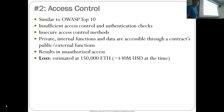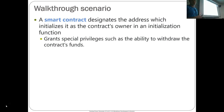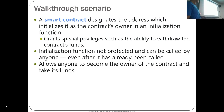This results in unauthorized access. Here is a walkthrough scenario: a smart contract designates the address which initializes it as the contract owner in some kind of initialization function. This grants that owner special privileges such as the ability to withdraw all of the contract's funds. But the initialization function is not protected and can be called by anyone, allowing anyone to become the owner and take all the funds.